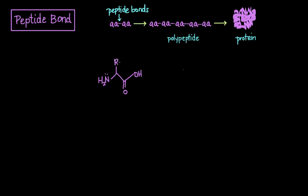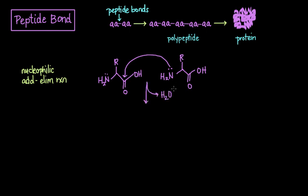Peptide bonds are formed by the nucleophilic addition elimination reaction between the carboxyl group of one amino acid and the amino group of another amino acid. The electron pair on the amino group of the second amino acid comes over to form a bond with the carbonyl carbon of the first amino acid. You give off a water molecule in the process.